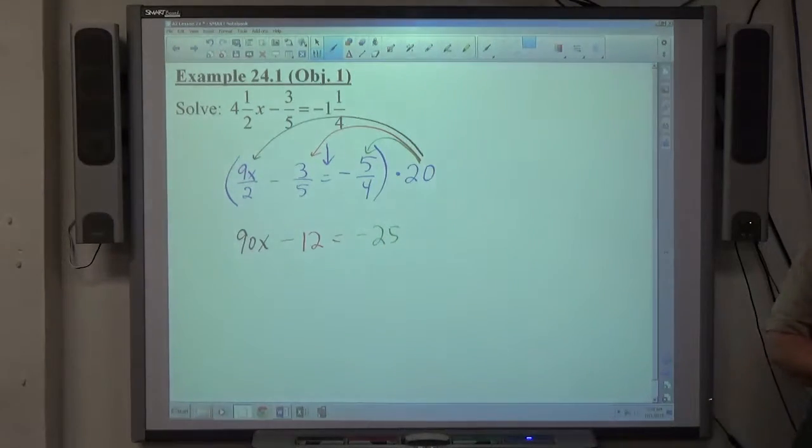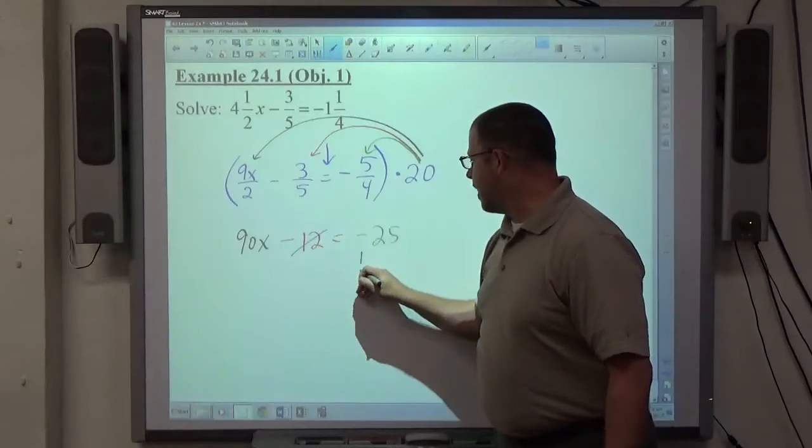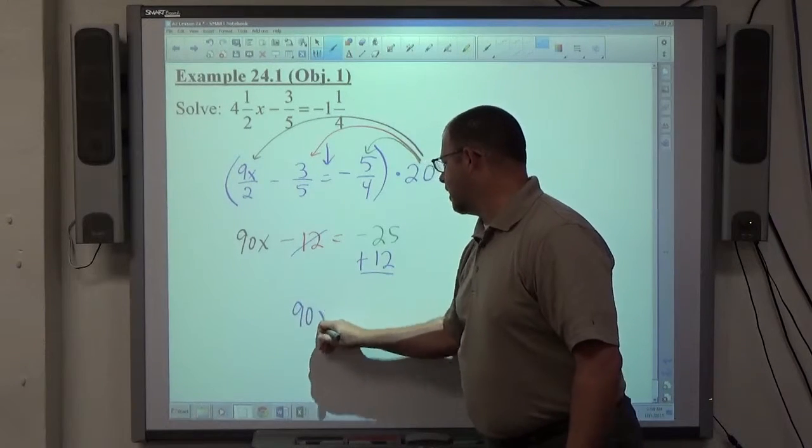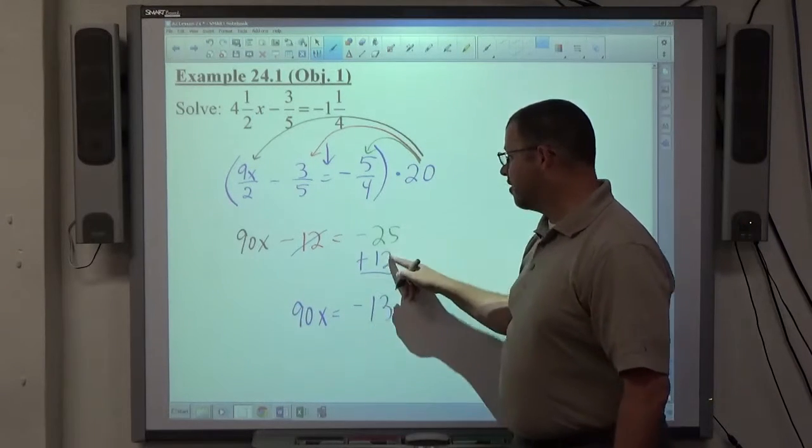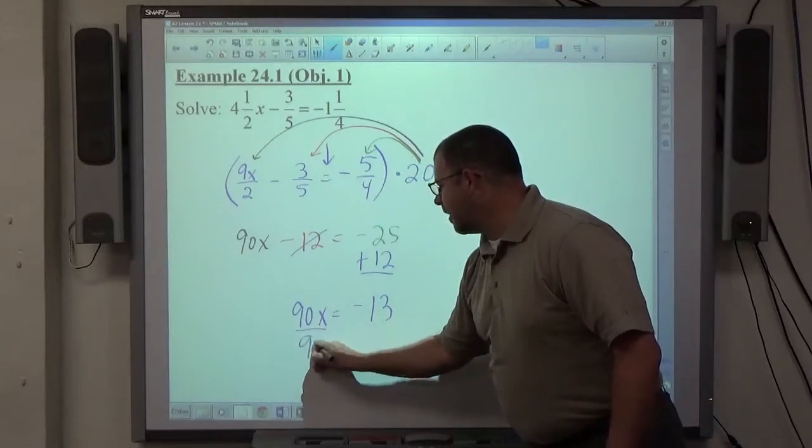That equation has a simple answer now, a simple process of getting the answer. All we've got to do is solve by moving the 12 to the other side. That gives me 90x equals negative 13. Subtraction because the signs are different, negative because 25 is bigger.